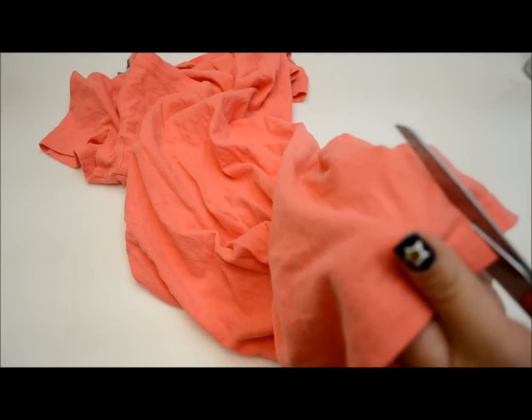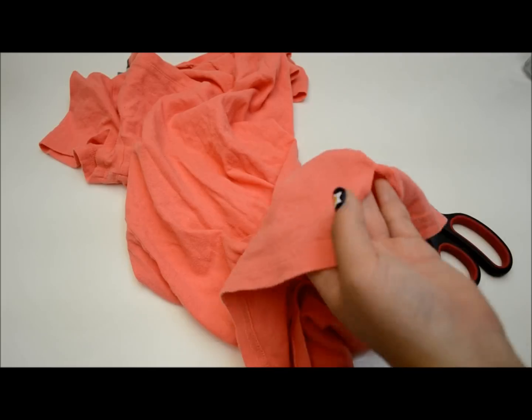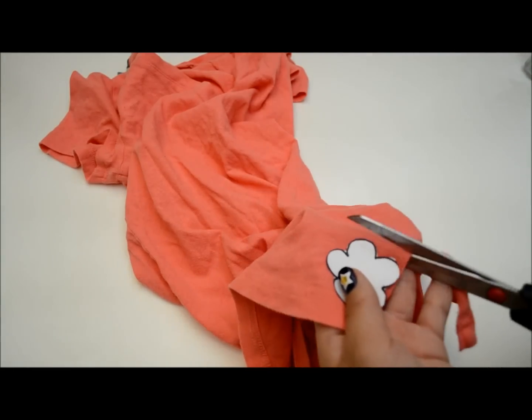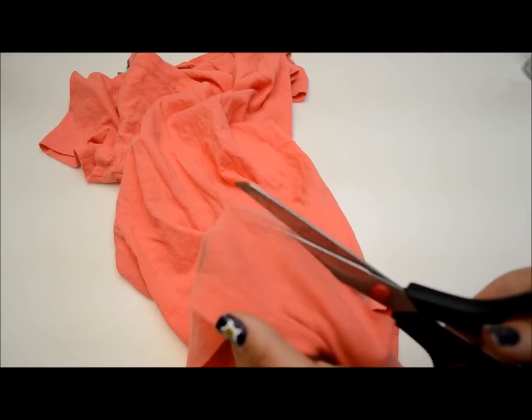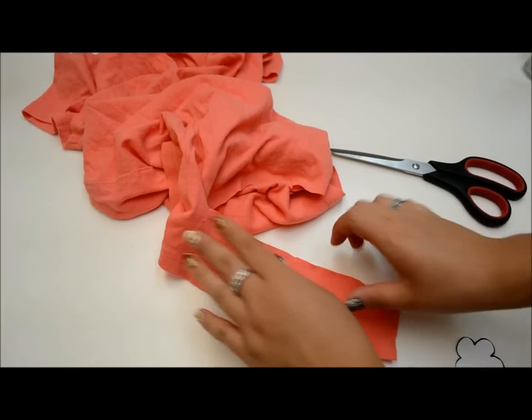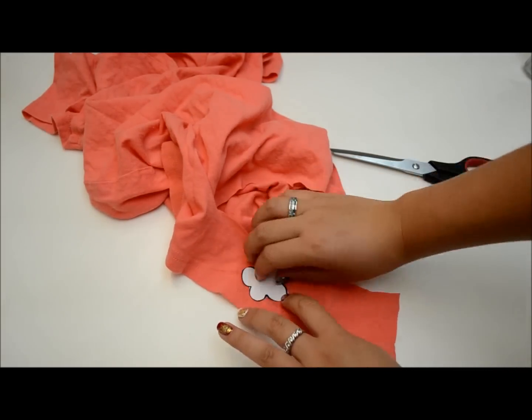Cut a strip the same width as the flower cutout and the length of 9. You can measure this on the t-shirt and then just cut the strip out. You need 9 flowers, but I cut 4 and 5 at a time.